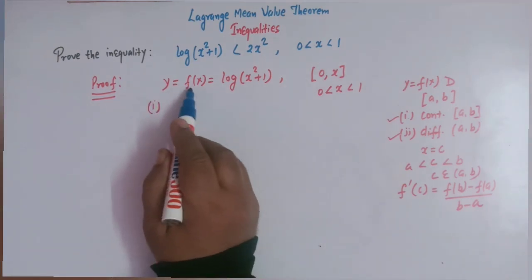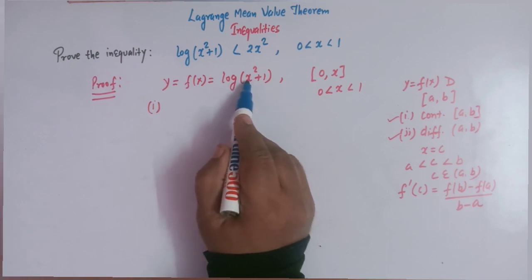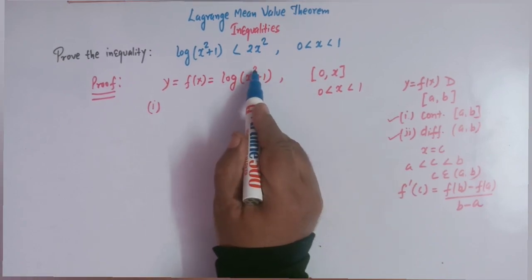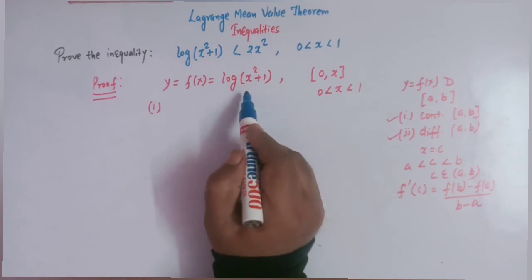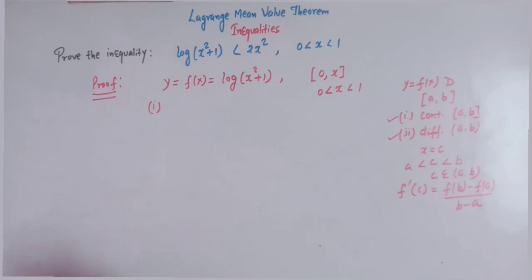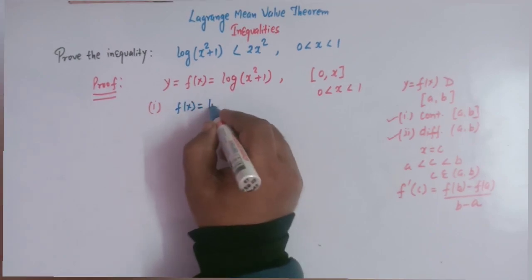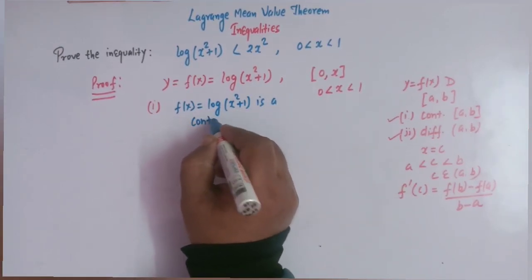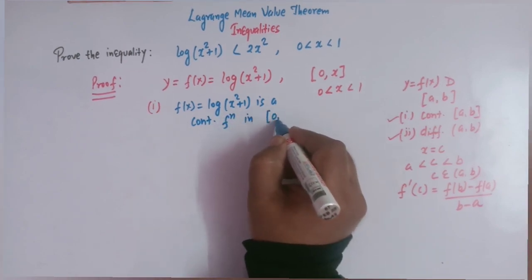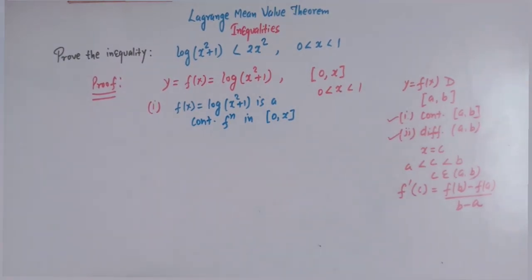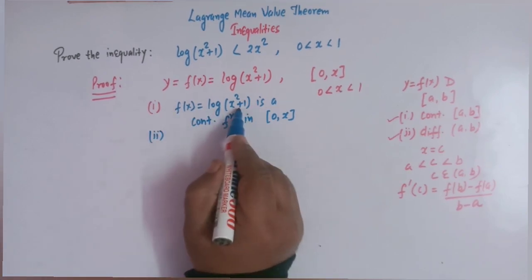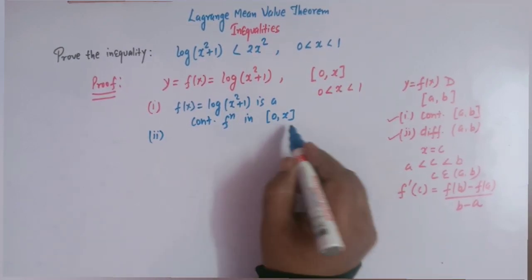Here we have the logarithmic function. Since x² is always a positive quantity and 1 is positive, x² + 1 is a positive quantity. We know that the log function is continuous in its domain, so f(x) = log(x² + 1) is a continuous function in the interval [0, x] where x lies between 0 and 1.